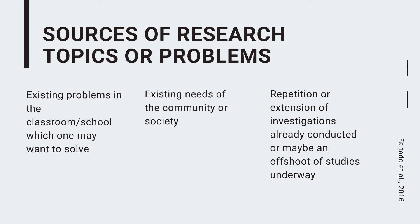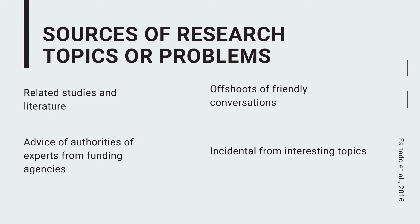Repetition or extension of investigations already conducted, or maybe an offshoot of studies underway, is another source. A replicated study is possible — there may be an existing study about it, but you would like to confirm and test whether the data is reliable. One good source of research topics or problems is related studies and literature. For example, if you are required to make a study about accounting or psychology specifically, you can search for related subject matter and find studies and literature about that field.